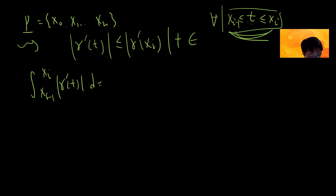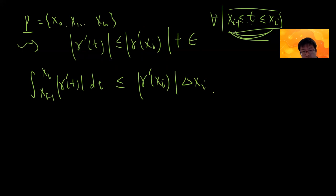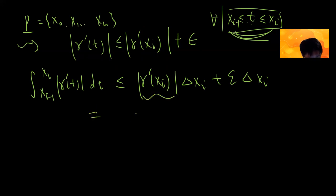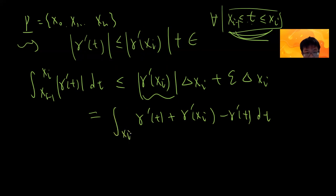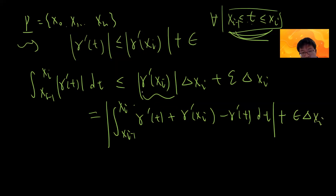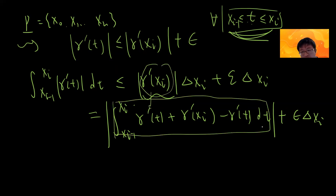Integrating from x_{i-1} to x_i, we get the integral of |gamma'(t)| dt is less than or equal to |gamma'(x_i)| · delta x_i + epsilon · delta x_i. We rewrite |gamma'(x_i)| as |gamma'(t) + (gamma'(x_i) - gamma'(t))| and apply the triangle inequality, splitting into two parts.